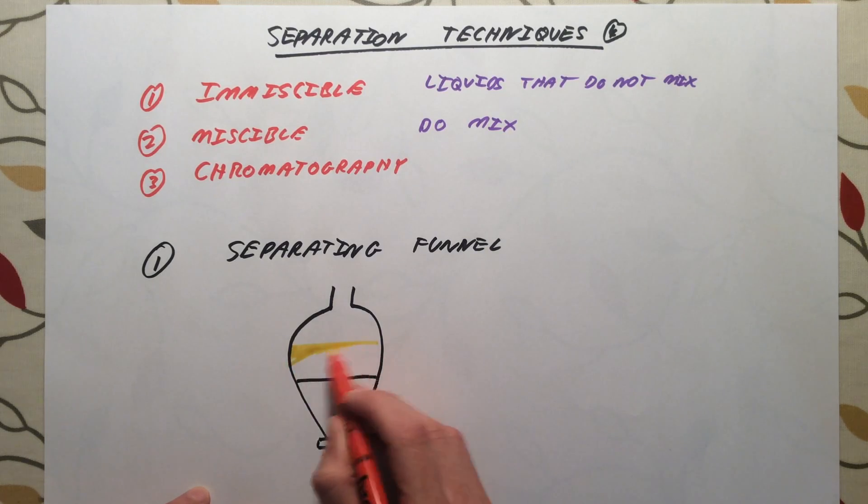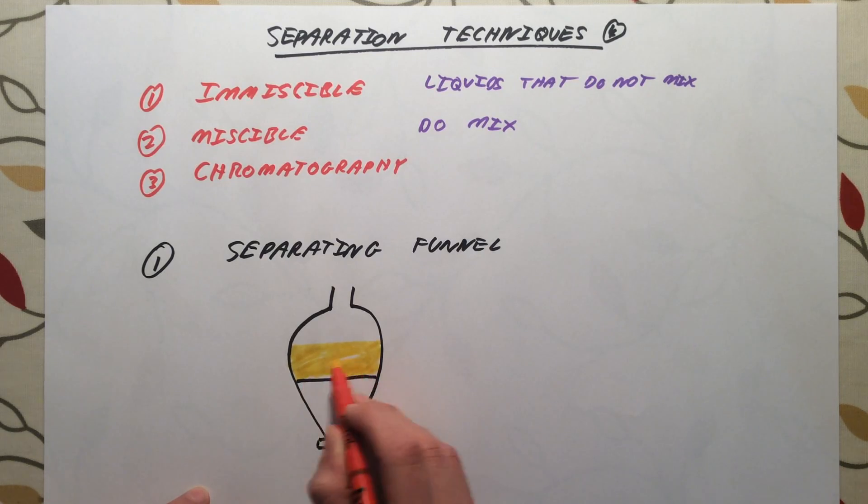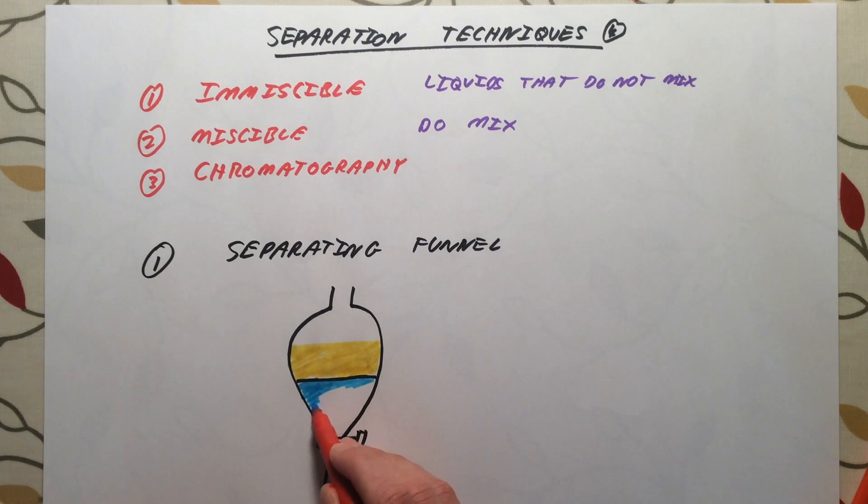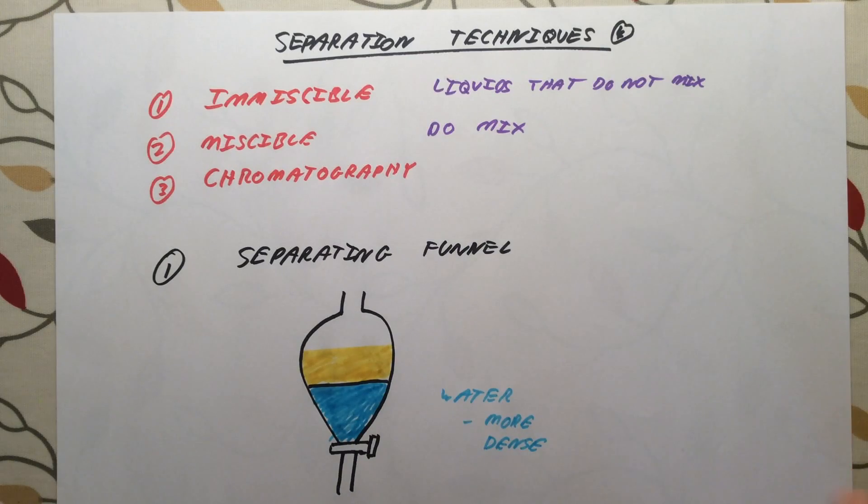One example of a mixture that we could separate using this would be oil and water. We're going to have a layer of oil, which, imagine you are washing up a greasy pan at home, the oil will always float on top of the water you have, unless you use lots of washing up liquid. So, we have a top layer of oil. We are then going to have a bottom layer of water. Our more dense liquid, or our denser liquid, will always sink to the bottom. Water will go to the bottom because it is more dense than oil. Oil will stay at the top because it is less dense.